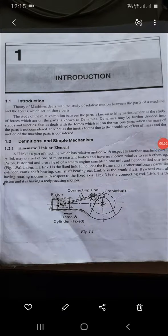Kinematic Link is a part of the machine with respect to other machines. Links are made of one or more resistant bodies that have relative motion to each other.